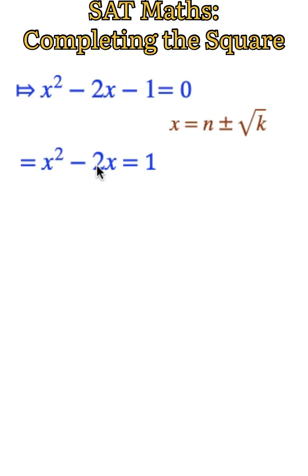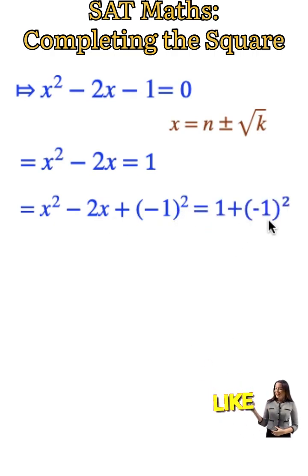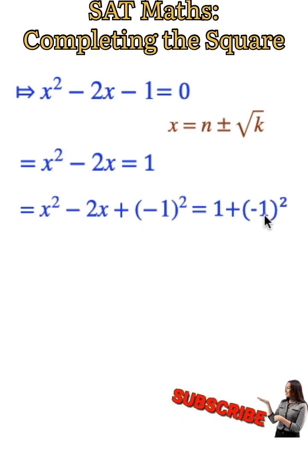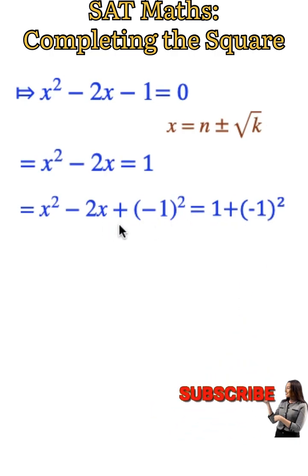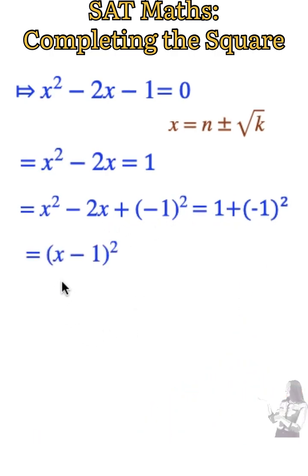Adding the square of half of minus 2 to both sides, we have x squared minus 2x plus minus 1 squared equals 1 plus minus 1 squared. Minus 1 squared is 1, then when we factorize this equation we have x minus 1 raised to 2 equals 2.